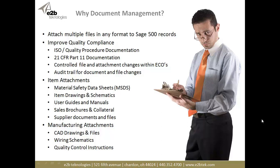In manufacturing, there are lots and lots of files — CAD drawings, schematics, specific material handling suggestions or directions, quality control procedures. All these different things can be attached to a routing and a bill of material.